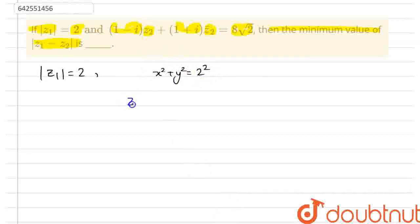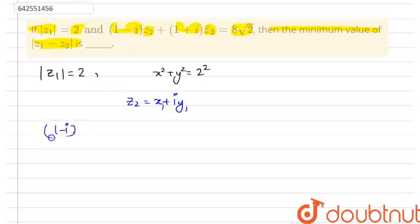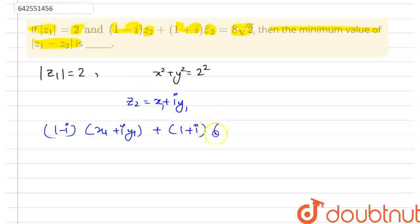Let z2 equal x1 plus i·y1. Substituting that value, we get: (1 minus i)(x1 plus i·y1) plus (1 plus i)(z2-bar), where z2-bar equals x1 minus i·y1, and this equals 8√2.